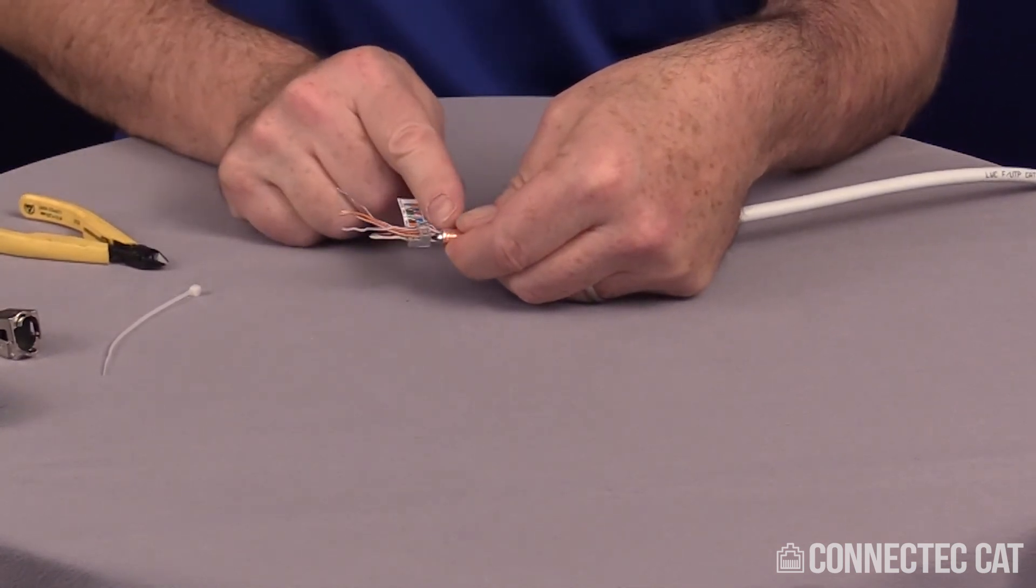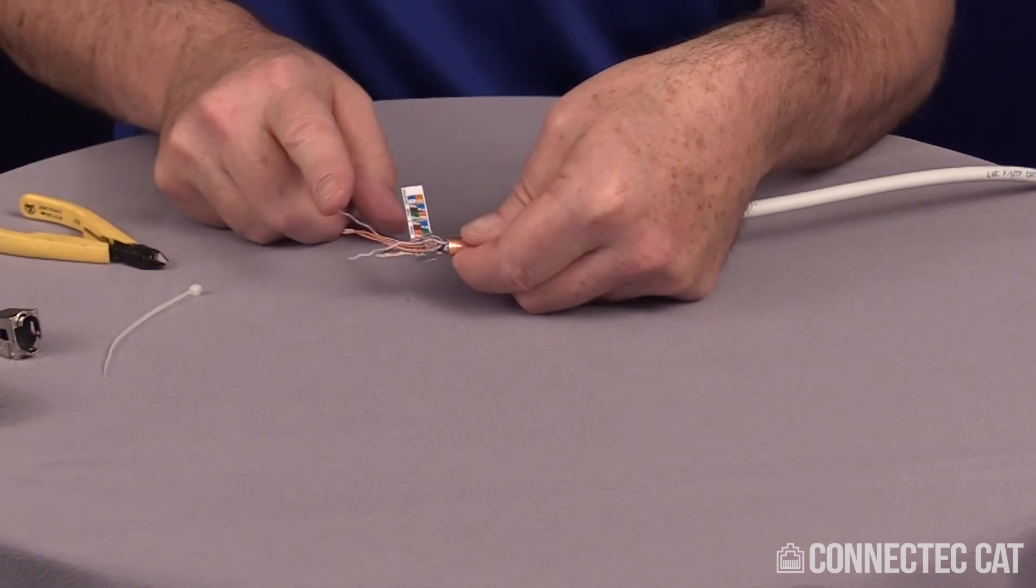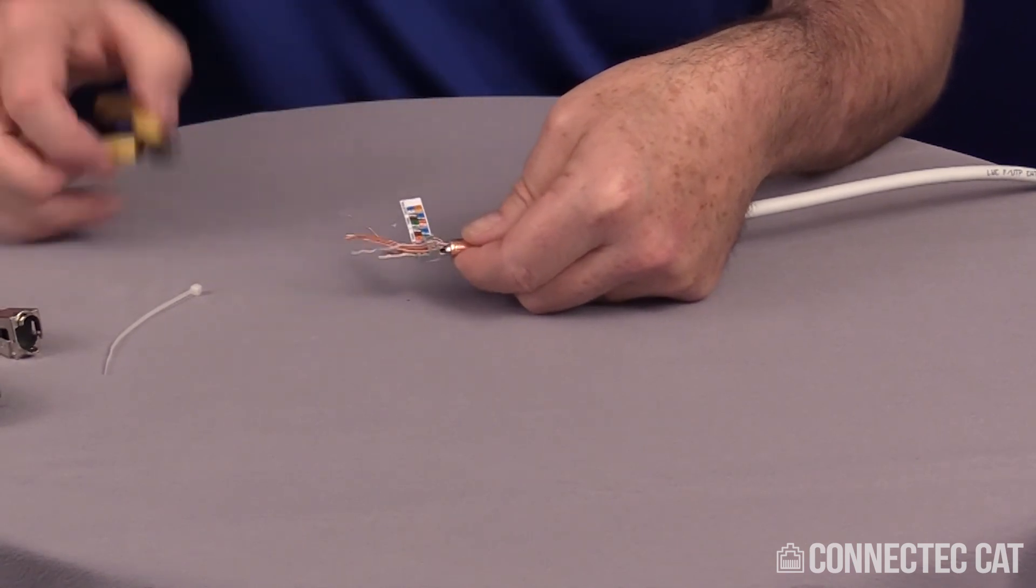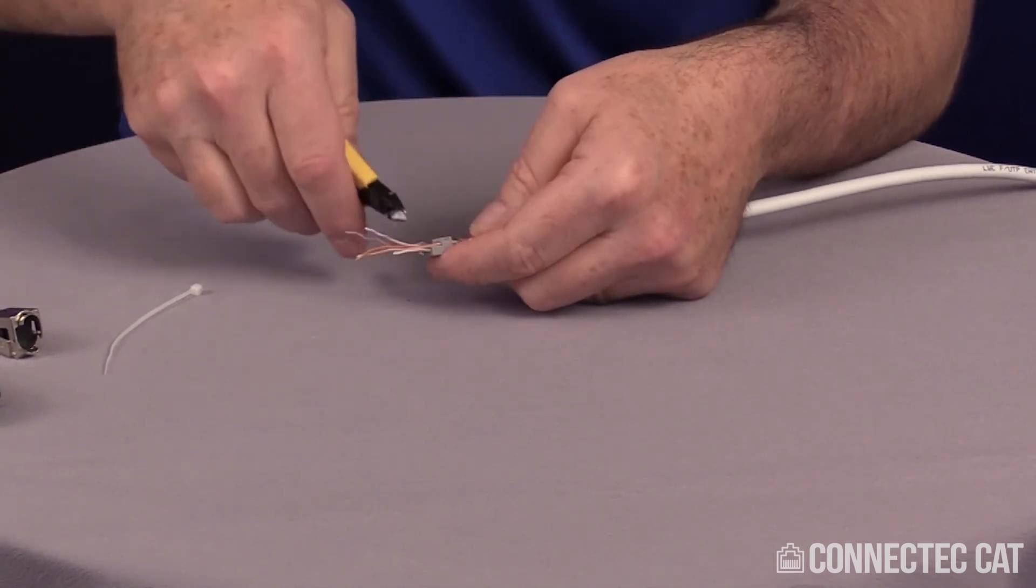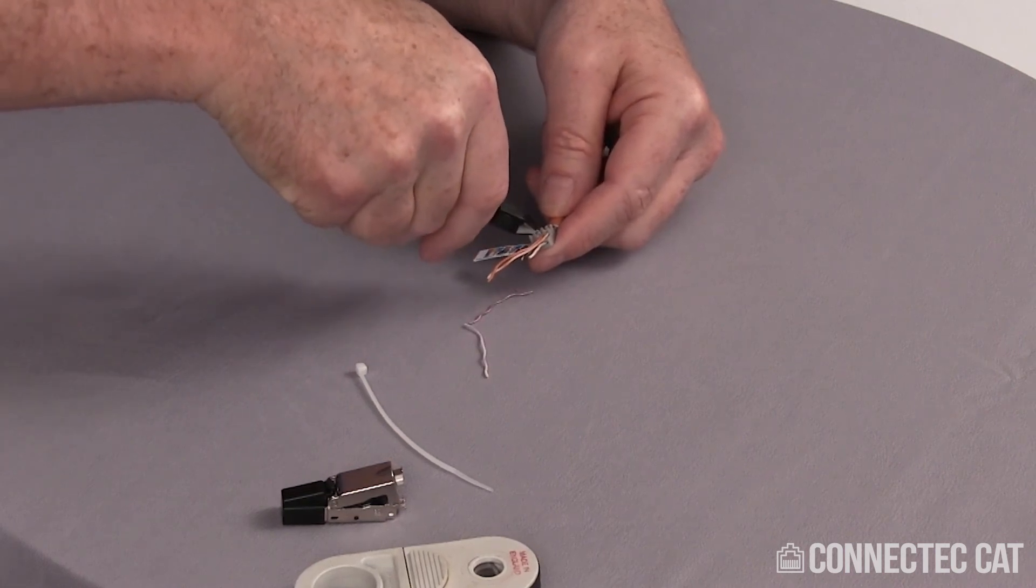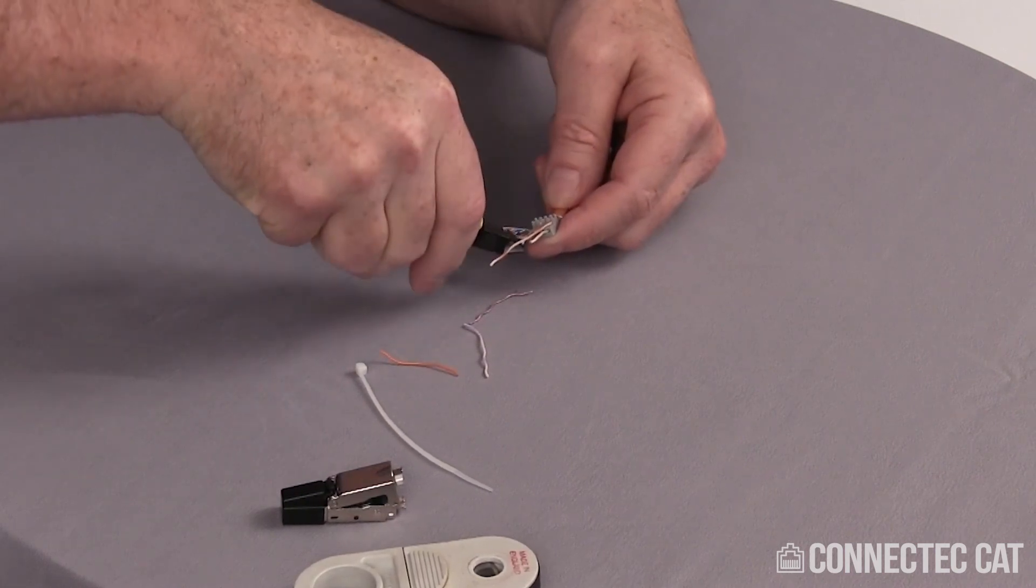You want to have your load bar as close to the jacket as possible. Have it in this position now. I'm ready to trim off all my wires. So using the flush side of the flush cutters here, I'll trim all these off nice and flush.